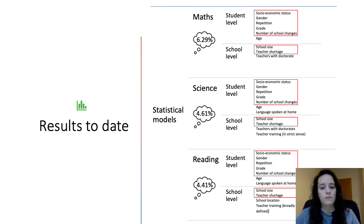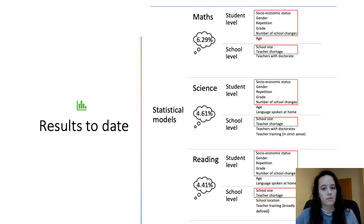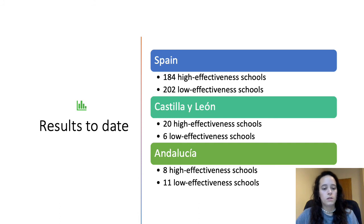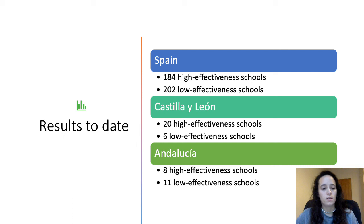After developing the multilevel models, we selected high and low effectiveness schools by using the residuals and obtained the following results. We obtained 184 high-effectiveness schools in Spain and 202 low-effectiveness schools. In Castilla y León there are 20 high-effectiveness and 6 low-effectiveness schools, and in Andalucía we have 8 high-effectiveness and 11 low-effectiveness schools.